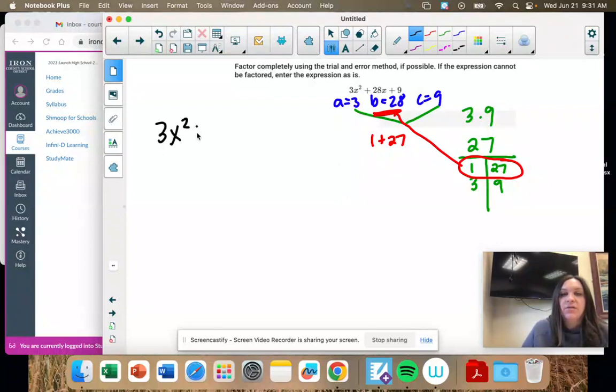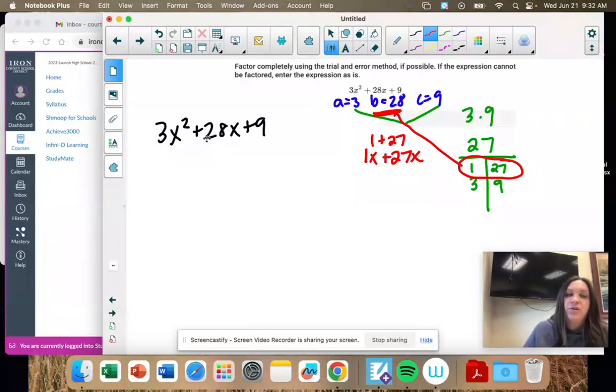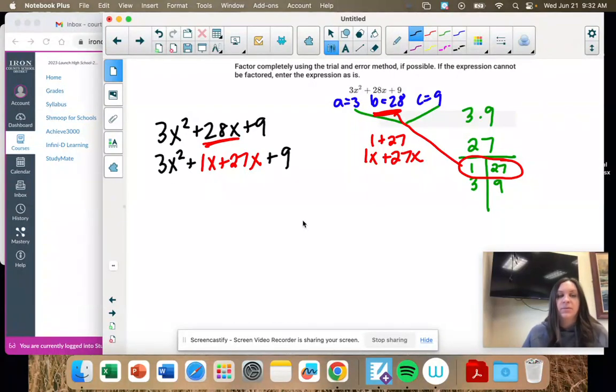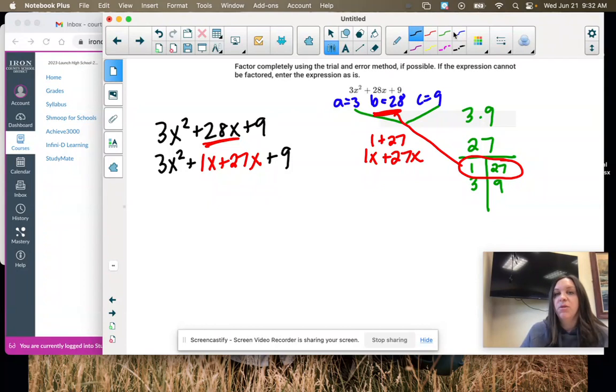So I'm going to rewrite this over here. The next step is to take this 1 and 27 and put X's with it and rewrite that middle term. So instead of 28, we're going to have 1X plus 27X.